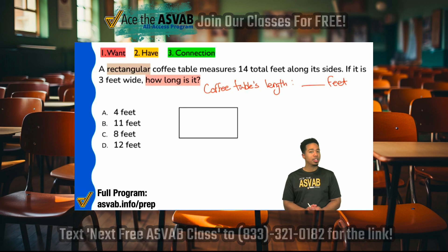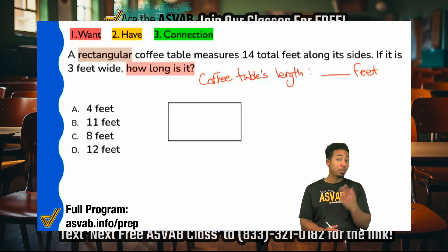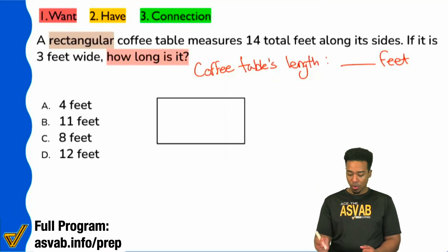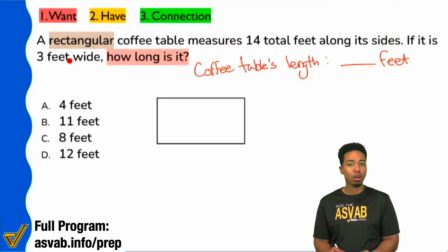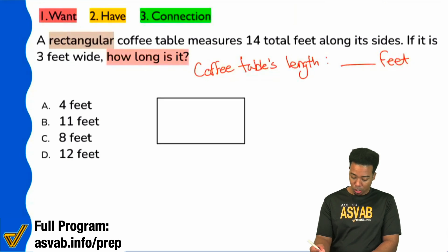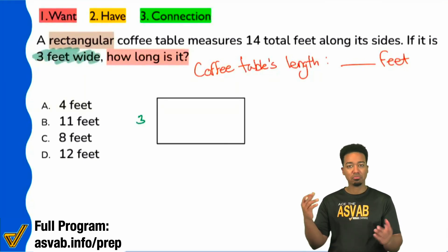Now we already have a piece of information about it. We have two pieces of information about the coffee table. One, we see that it measures 14 total feet along its sides. And then two, it says that it's three feet wide. Okay. Sounds good. So what I can say, if it's three feet wide, I'll go right over here and I'll say, okay, it's three feet wide. Sounds good.